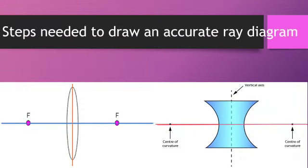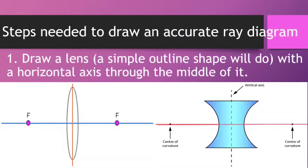The following are the steps needed to draw an accurate ray diagram. First, draw a lens with a horizontal axis through the middle of it. So you will see from the diagram the two types of lenses. The first one is the convex and the second one is the concave.